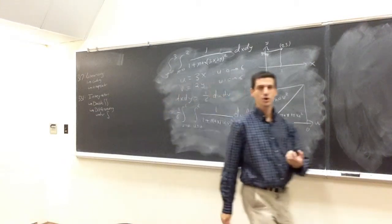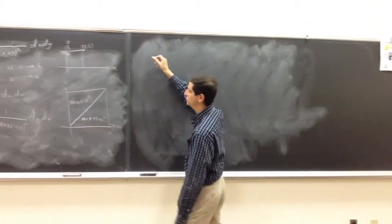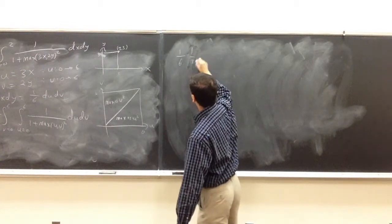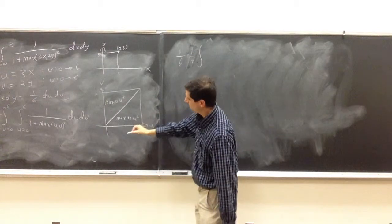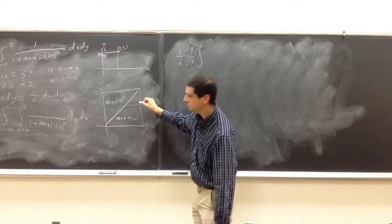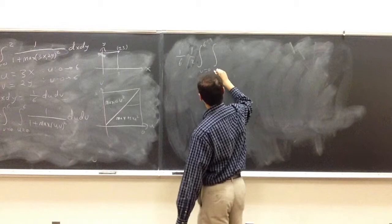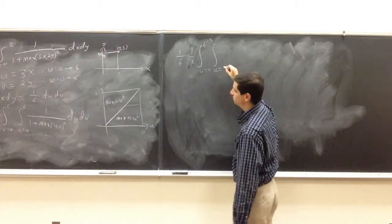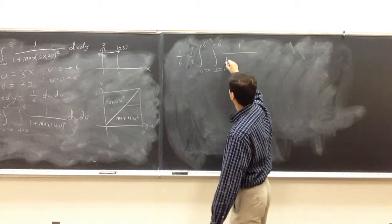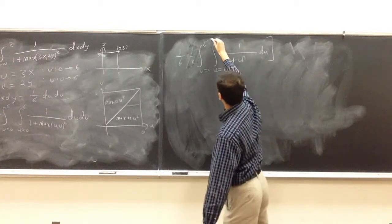Now it's a question of which region is easier to work with. We have 1/6 times 2. If we fix v and let u run from v to 6, then v goes from 0 to 6, and we integrate 1 over 1 plus u squared du dv.